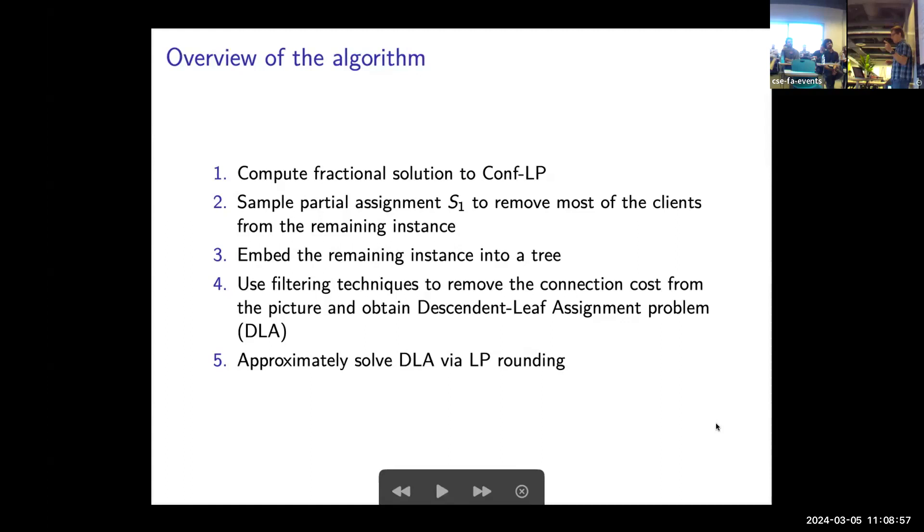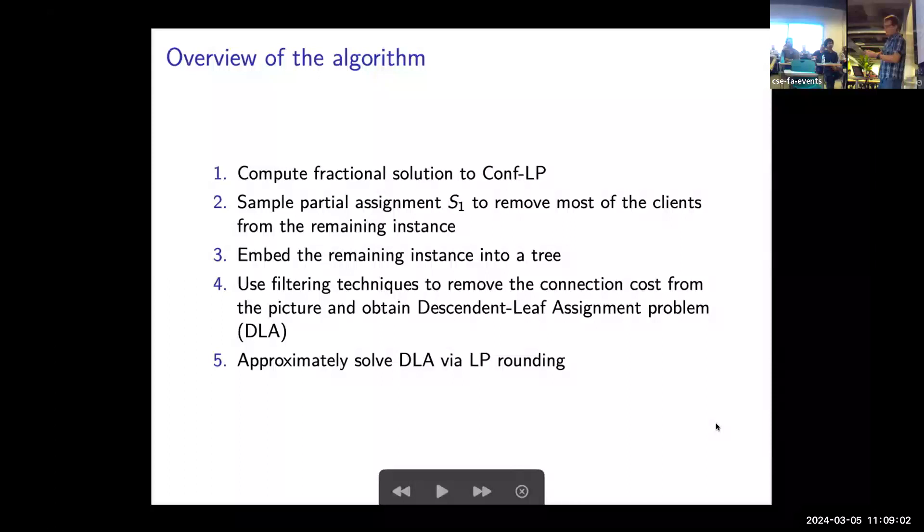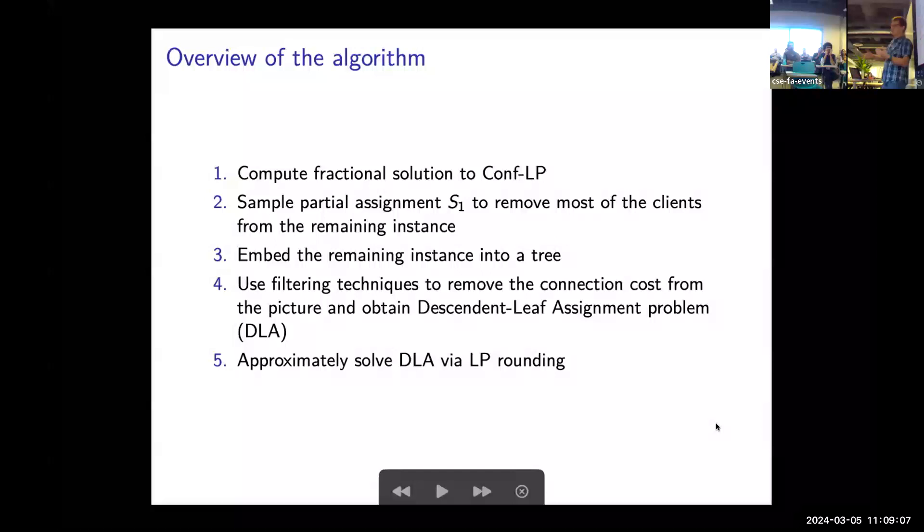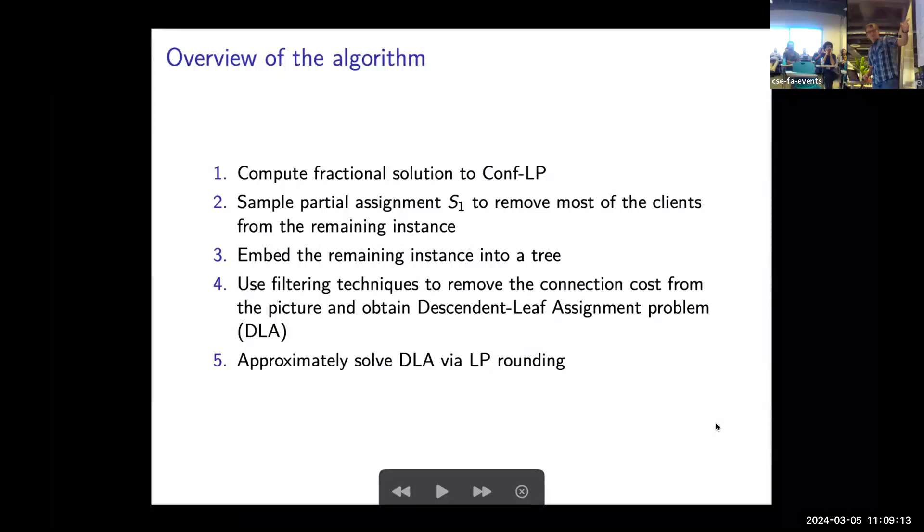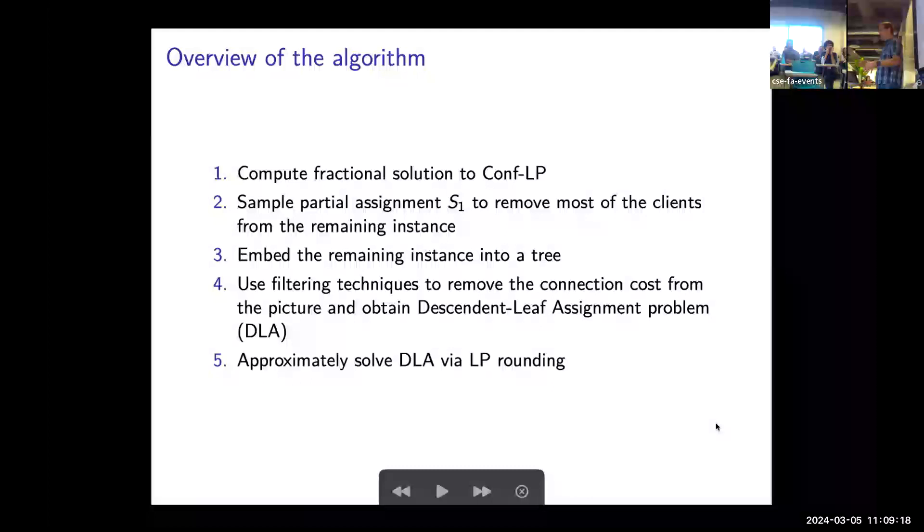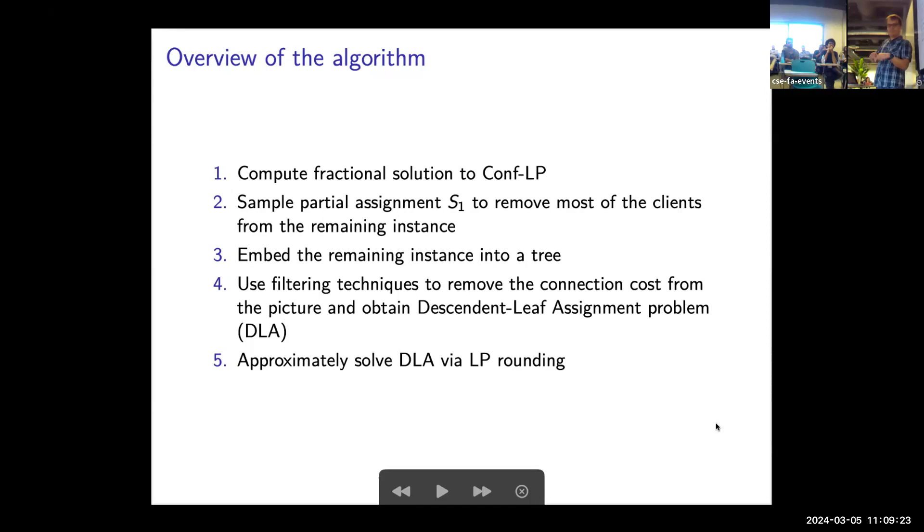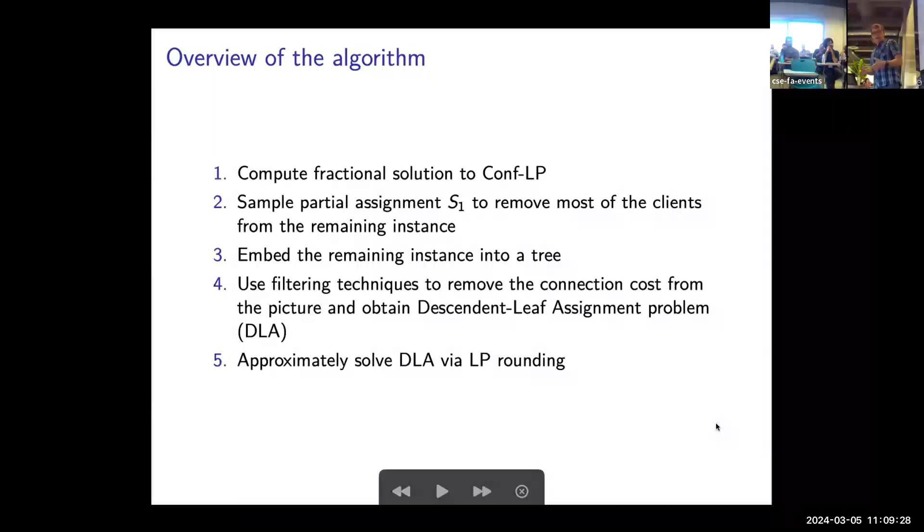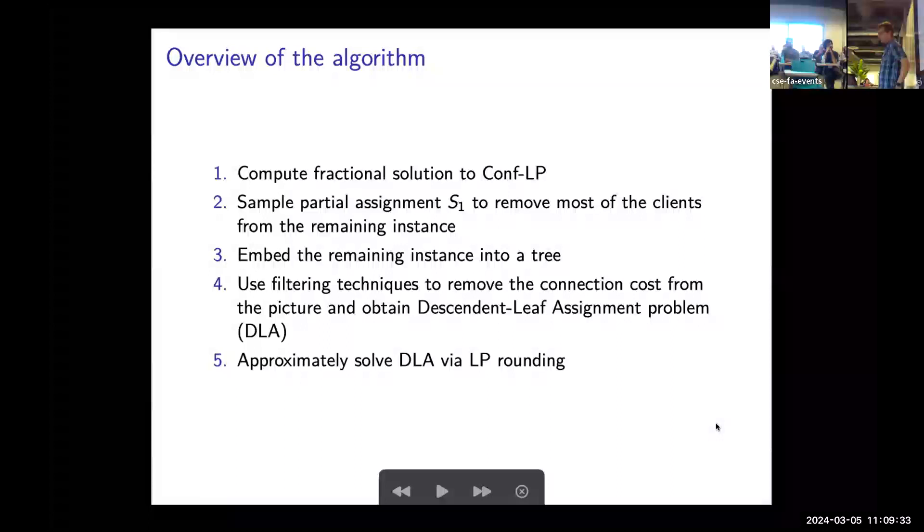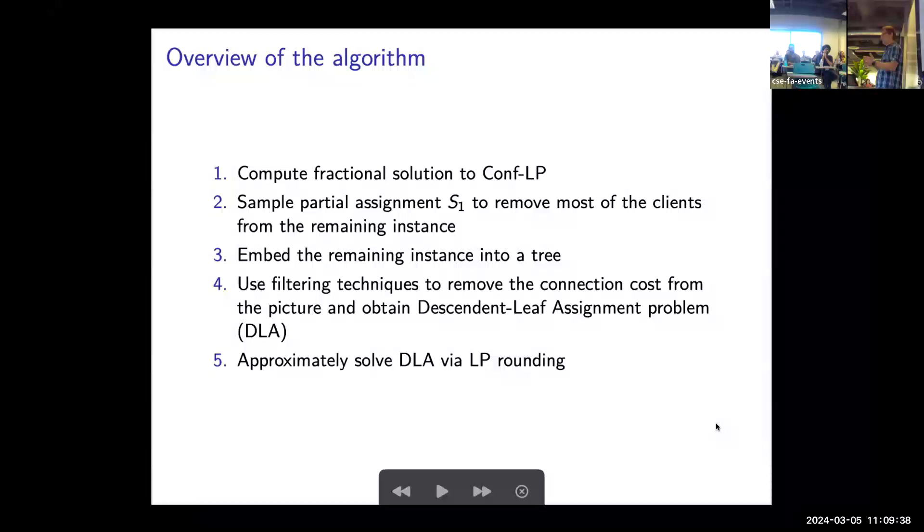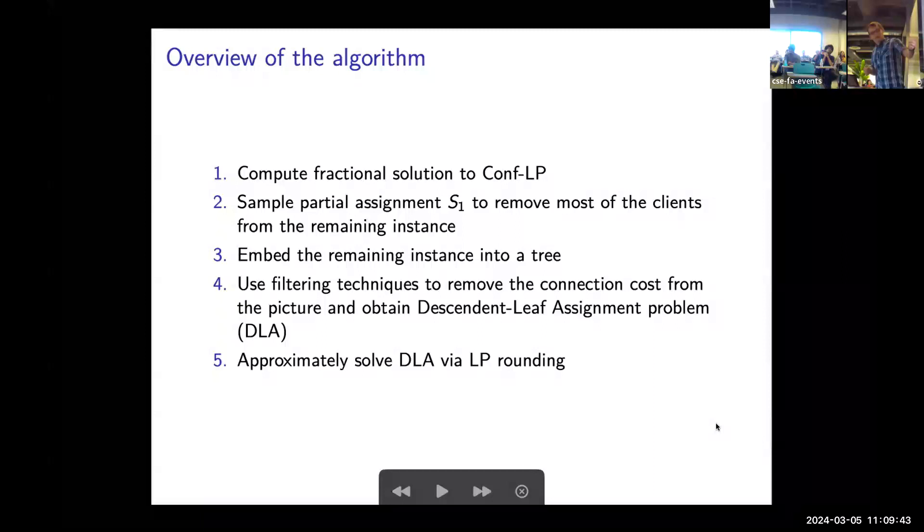Then we sample some configurations, meaning compute a partial solution that already assigns the clients that are covered by these sampled configurations. Then we reduce the instance to a residual instance with a smaller number of clients. We embed the metric for the remaining clients into a tree, and afterwards we use techniques in LP rounding with some filtering to get rid of the objective function to make it a feasibility problem. In the end, there's LP rounding to solve the feasibility problem.